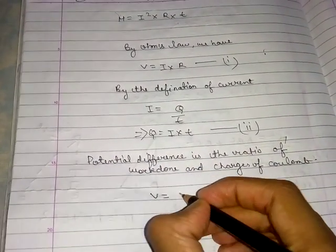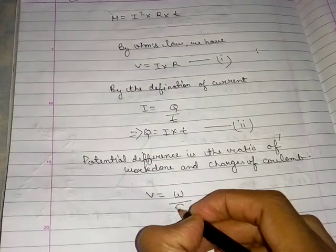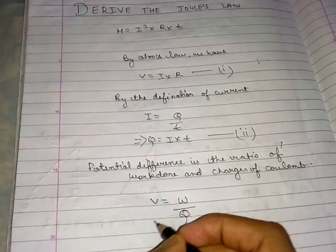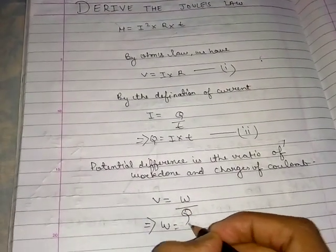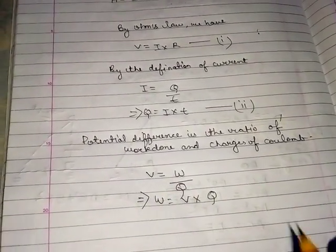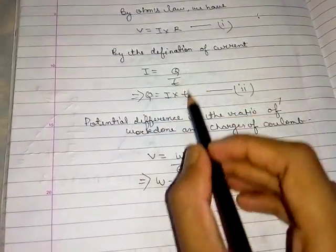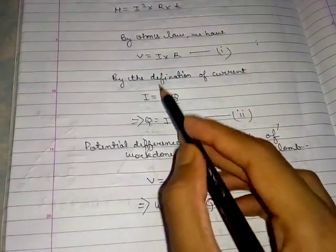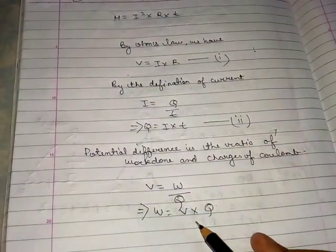Work done equals V into Q. Now we need to find the values of V and Q to substitute in this equation.